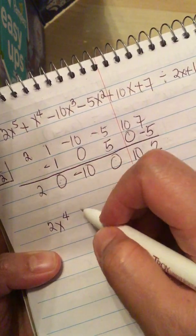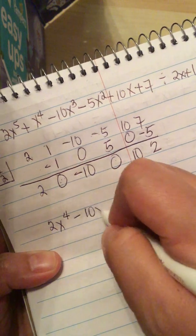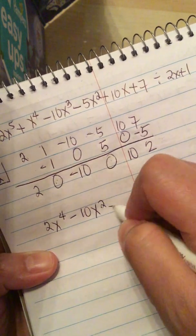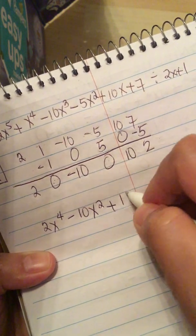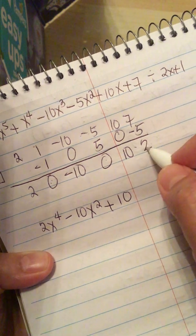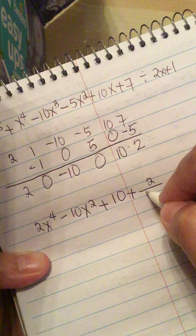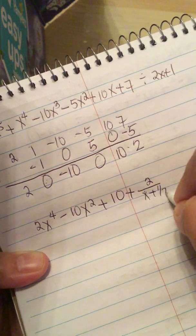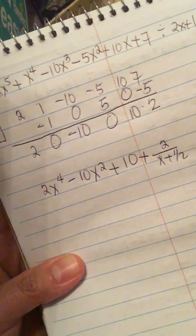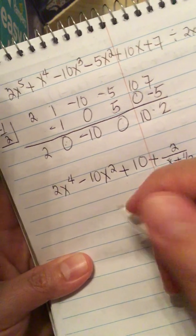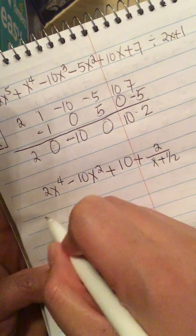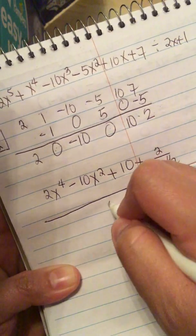So now this reduces to 2x to the fourth. And then we have minus 10x squared plus 10. And then the remainder is 2. So plus 2 over x plus 1 half. So now we divide the result by the denominator factor. So everything will be over 2.